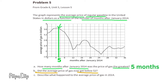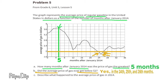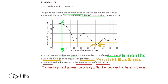Part B: did the average price of gas ever get below $2? This horizontal line represents $2. As you can see, there was one time when gas went below $2, so the answer is yes. During the 24th, 25th, and 26th months after January 2014, the gas price dipped below $2. Part C: the average price of gas rose from January to May, then decreased for the rest of the year.